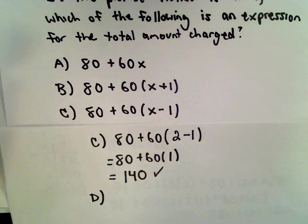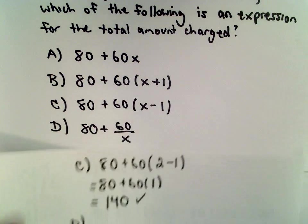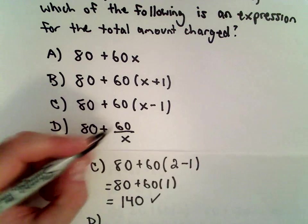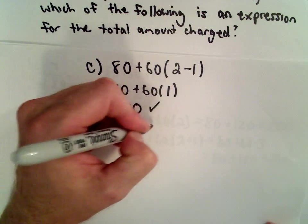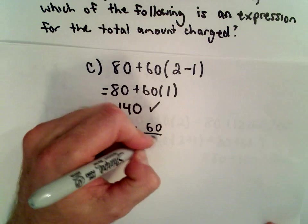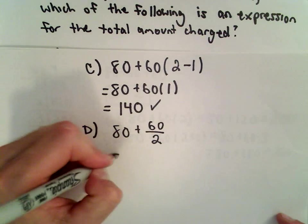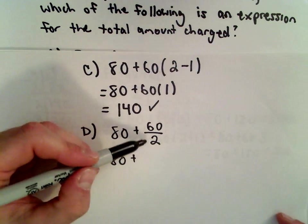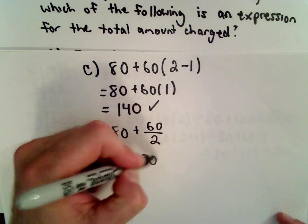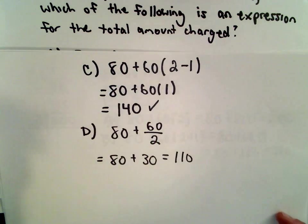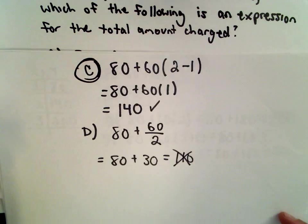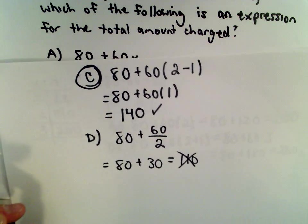Let's see if D somehow magically gives us the right amount. So for D, we have 80 plus 60 divided by x. Again, we're letting x equal 2, the number of hours. 60 divided by 2 is going to be 30. So in this case, we're getting 110. Again, that's not the correct amount of 140. So certainly, it looks like C is correct.